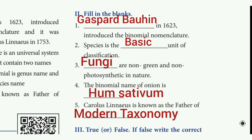Fill in the blanks. First: blank, in 1623, introduced the binomial nomenclature. The answer is Gaspard Bauhin. Second: species is the blank unit of classification. The answer is basic.